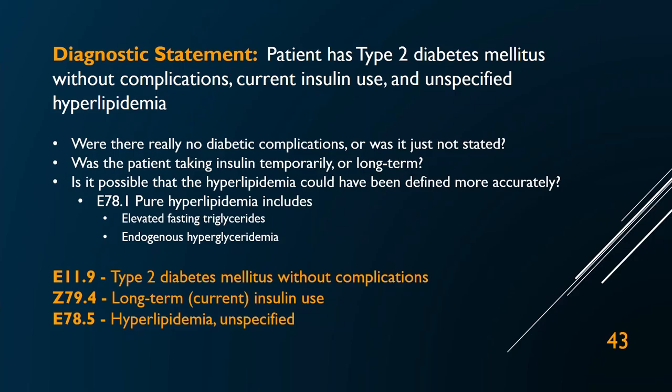This brings up several questions as an auditor looking at this record. Were there really no diabetic complications, or was it just not stated? The ICD-10 guidelines tell us to use 'without' as a default when not told otherwise. It also wasn't clear whether the insulin use was temporary or long term — and the code really does say long term. The hyperlipidemia situation still bugs me. I would go back to the provider and ask: is it possible this patient actually has E78.1 instead of E78.5? I can show them the inclusion terms under that code. If they confirm those are synonyms, I ask them to please use the words 'elevated fasting triglyceride' or 'endogenous hyperglyceridemia' from now on.